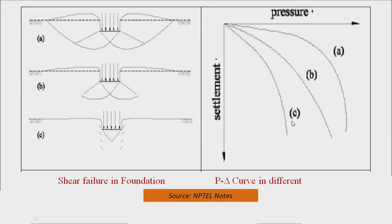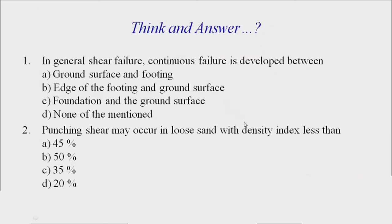In general shear failure (A), soil takes a high amount of pressure with less settlement. Similarly in local shear failure (B), high load and less settlement occur. In punching shear failure (C), since it occurs in loose soil, it takes less load and a high amount of settlement occurs.